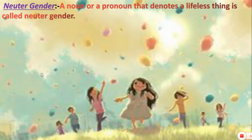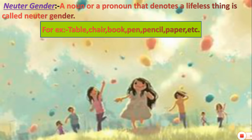Next, let's talk about neuter gender. Neuter gender basically refers to non-living things. A noun or a pronoun that denotes a lifeless thing is called neuter gender. For example: table, chair, book, pen, pencil, paper, etc.